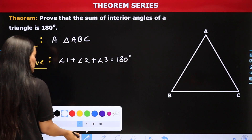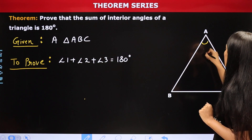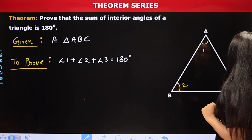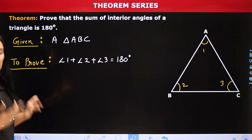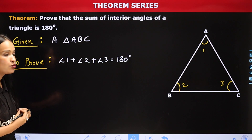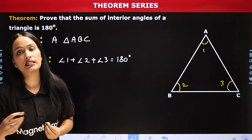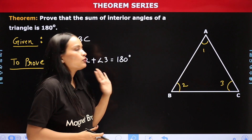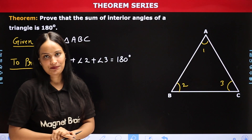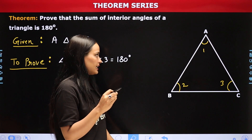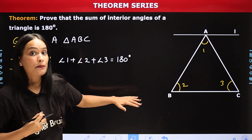मैं diagram में angle 1, angle 2, angle 3 दिखाना चाहता हूँ। Triangle ABC बनाओ, यहाँ पे 1 लिख दो, यहाँ पे 2 लिख दो, और यहाँ पे 3 लिख दो। Given हो गया, To Prove हो गया। अब proof के लिए हमें एक construction करना होगा — point A से एक line draw करेंगे जो BC से parallel होगी।